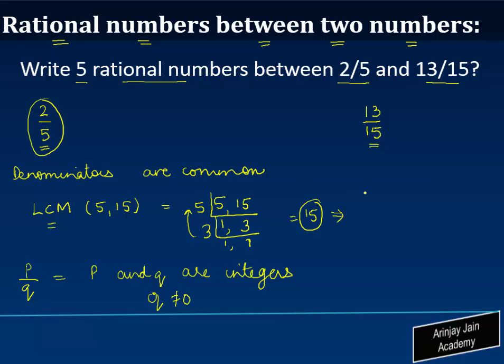The next step we convert these given fractions in such a form that they can be written with the denominator as 15. So we will multiply this by 3/3, why? Because 5 times 3 gives you 15 and 2 times 3 gives you 6. So in other words 2/5 can be written as 6/15. Similarly we need to convert the second number in such a form that the denominator becomes 15, but in this case this is already 15.